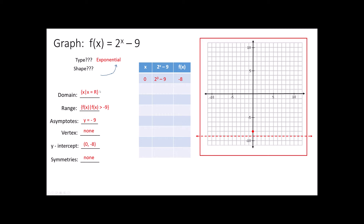Every exponential function has a domain of all real numbers. Every exponential function does not have a vertex, and every exponential function does not have any symmetry. Once I have this first point, I know my graph is going to start off down here, come up and approach this point, and get steeper and steeper until I run out of room. All I need to do is find a couple of points in order to see the pattern.